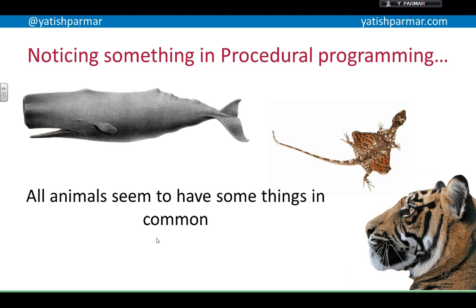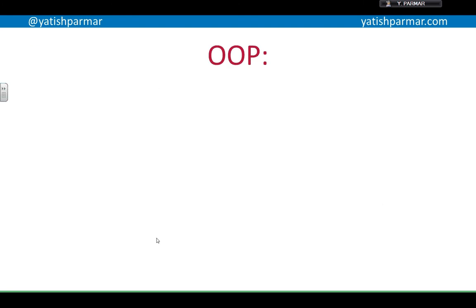For example, we've got whales, we've got lizards, we've got tigers, and we have a procedural program dealing with these different creatures. They started to realize that all animals have something in common, and they came up with this idea that we can see what data is common between things. And that's where object oriented programming comes in, because it basically says that everything essentially is a data structure.